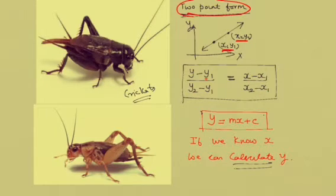Now using this equation we can finally convert it to y equals mx plus c form. If you know x, then we can calculate y. This is a simple linear equation. Now you may be wondering what are these two insects doing on this side. These are actually crickets.